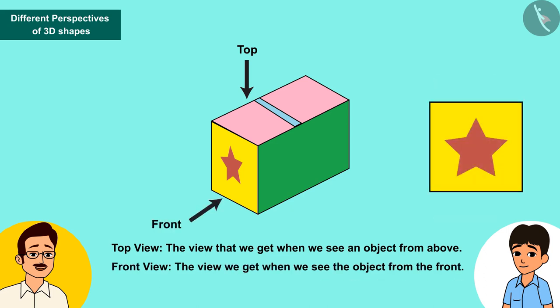The view that we obtain when we see the object from the front is called front view.